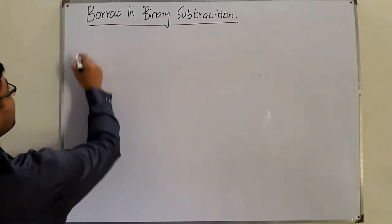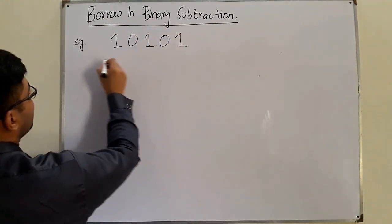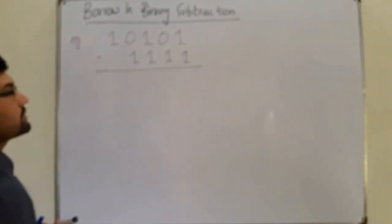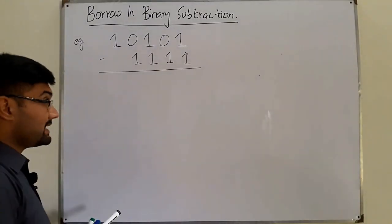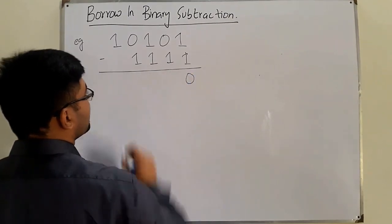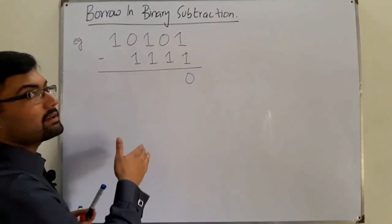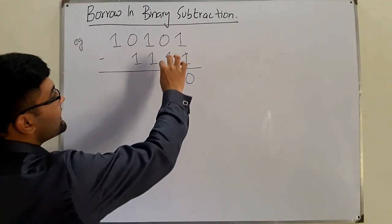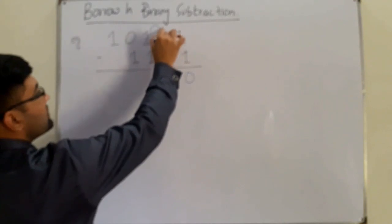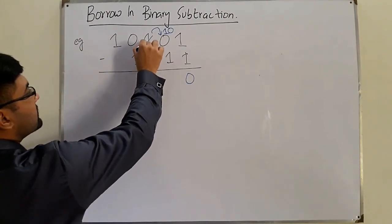Let's take the example: 10101 minus 1111, which we solved in the previous examples as well, but now we explain it in detail. So 1 minus 1 is 0. But for 0 minus 1, I have to take a borrow from the next bit because I cannot subtract 1 from 0. So this zero becomes 10, and this one — I have only taken one from it — is left to be 0.